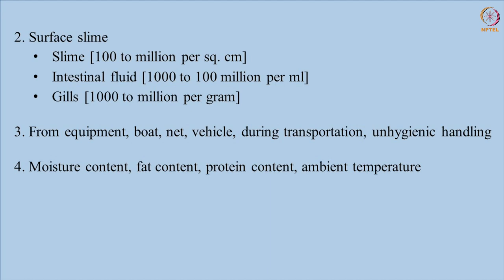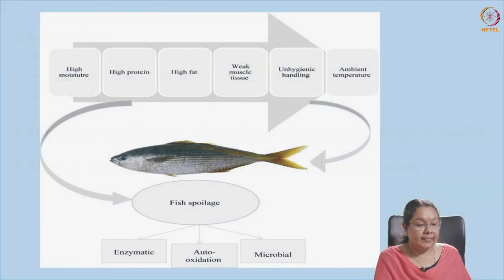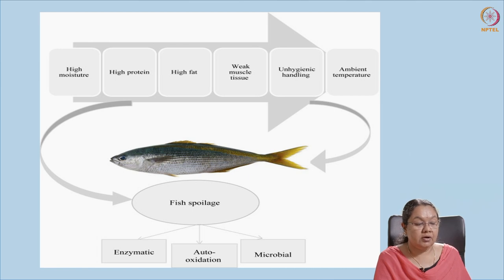Therefore, it is necessary to control the temperature — that is, to reduce the temperature immediately, either by chilling or freezing, or to increase the temperature through pasteurization or canning. Fish spoilage can generally be classified into three types: enzymatic, auto-oxidation, and microbial.